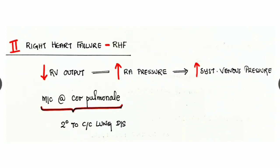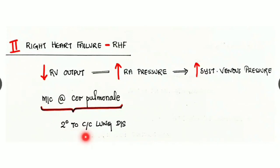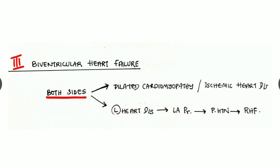Increased right atrial pressure causes increased back resistance, leading to increased systemic venous pressure. Right heart failure is most commonly seen in cor pulmonale, which is right heart failure secondary to chronic lung disease.